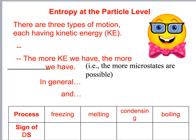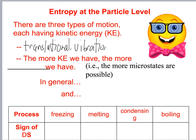Entropy at the particle level: there are three types of motion, each having kinetic energy — translational, vibrational, and rotational. The more kinetic energy we have, the more entropy we have.